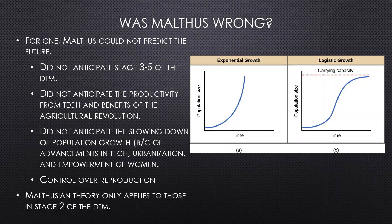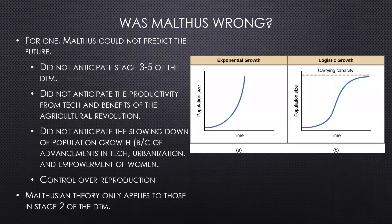Was Thomas Malthus wrong? It's tricky to answer — not a simple yes or no. For one, he couldn't predict the future. He didn't anticipate stages three through five of the demographic transition model, nor the productivity gains from technology and the agricultural revolution. He didn't foresee the development of agricultural technologies and techniques or fully account for humanity's ability to dramatically increase food production with new technologies.